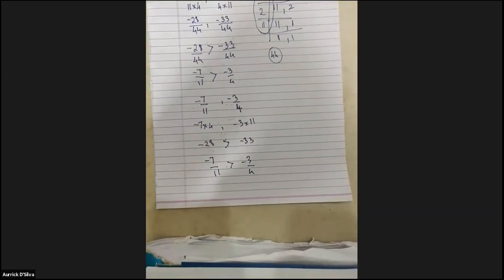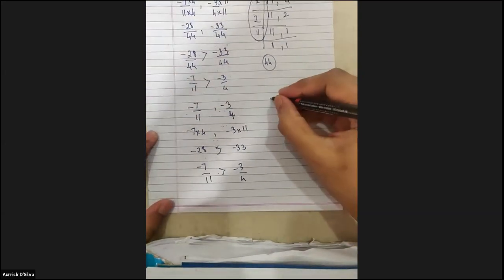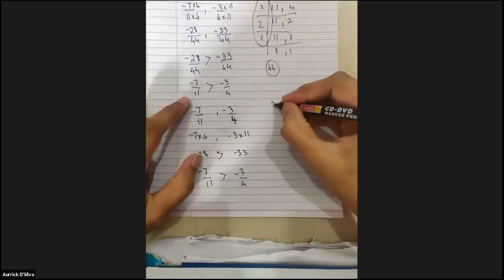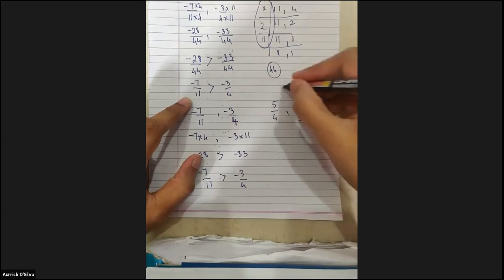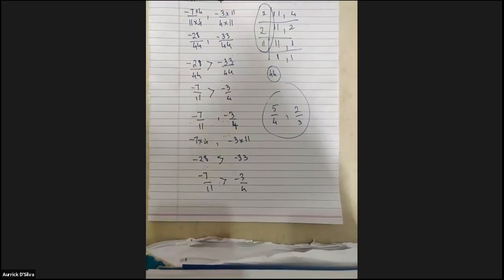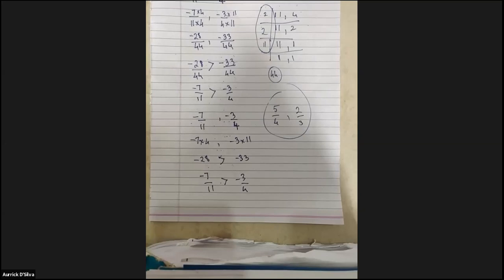Now I'll be giving you all questions, and I want you all to try and find the correct answer. I want to see who tells me the correct answer — which is bigger. The question is 5 upon 4 and 2 upon 3. Message me the answer; I'm checking the chat box. Whoever messages first will be the winner. Himani has answered correctly. She's done it correctly.